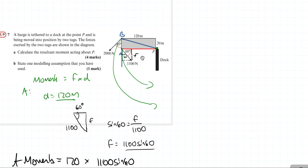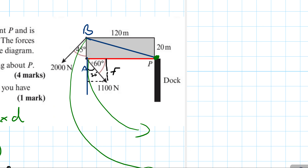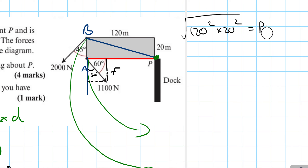Now for force B. It's trickier because it's easy to just think the distance is 120 metres, but we actually need to find the distance from P to the point where force B acts. We need to use Pythagoras: 120 squared plus 20 squared, square rooted, to find PB. That gives PB equals 20 root 37.